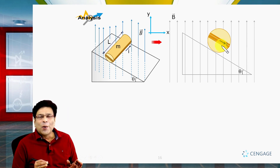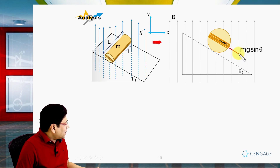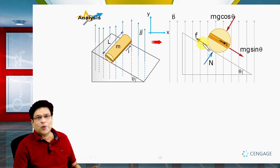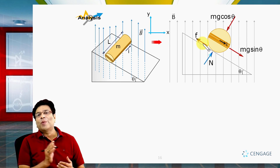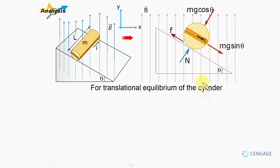Now we can identify the forces acting on the structure. The component of gravity parallel to the inclined surface is mg sinθ, and perpendicular to the inclined surface is mg cosθ. Normal reaction N is perpendicular to the inclined surface and towards the cylinder. Since the cylinder is in equilibrium, the friction force is static and directed parallel to the inclined surface in the upward direction. For translational equilibrium along the inclined surface: f = mg sinθ. This is the first equation.